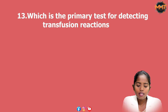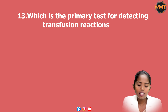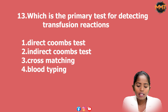Question 12: Which is the primary test for detecting transfusion reactions? Options: 1. Direct Coombs test, 2. Indirect Coombs test, 3. Cross matching, 4. Blood typing. The answer is Direct Coombs test.